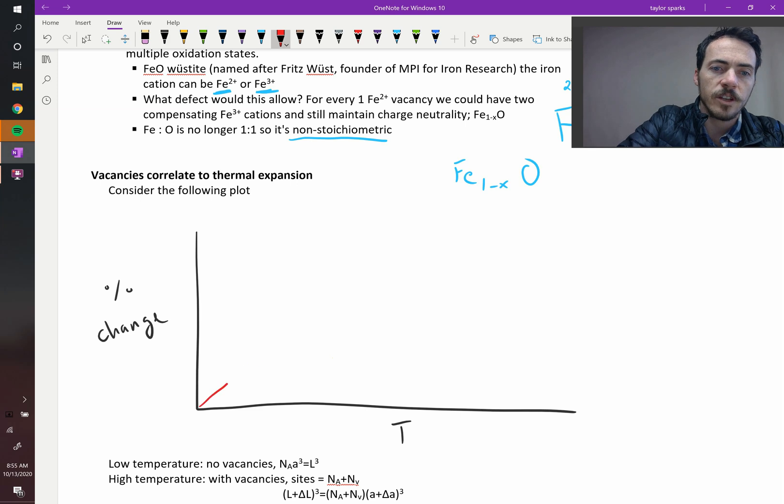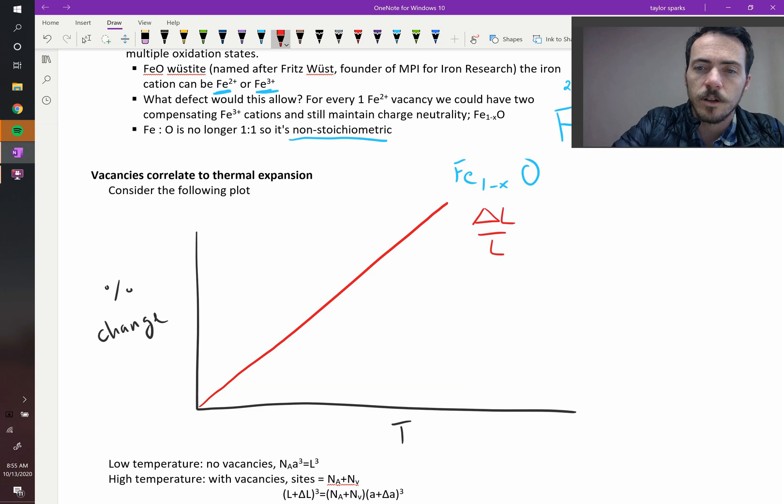We know that delta L over L is going to increase. That is thermal expansion. Literally, if you have some material, the plastic in this box, when I heat it up, it's going to expand a little bit. And that's going to be delta L over L.